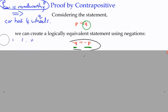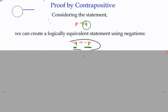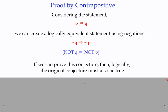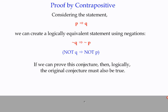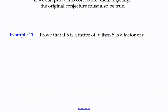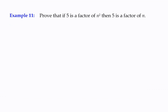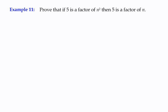So we're going to create a contrapositive statement, prove that it is correct, which by logic proves the original conjecture true as well. Let's look at Example 11: prove that if 5 is a factor of n², then 5 is a factor of n. So, 5 is a factor of n² is statement P, and statement Q is: 5 is a factor of n.